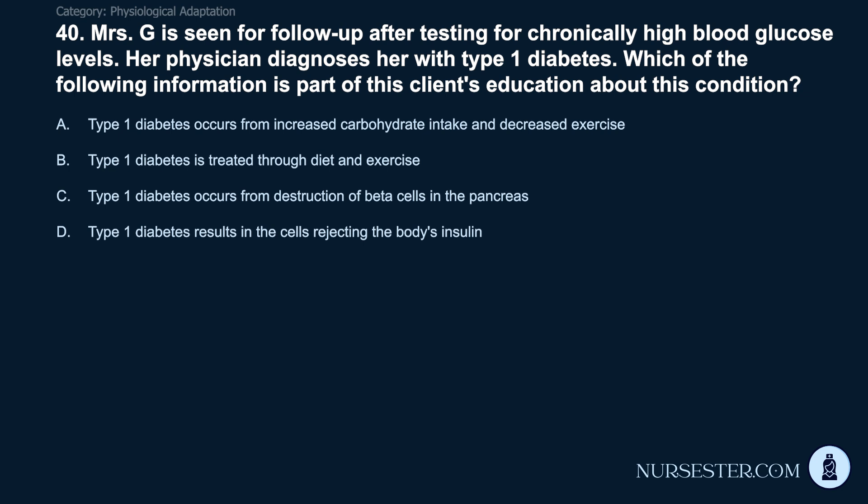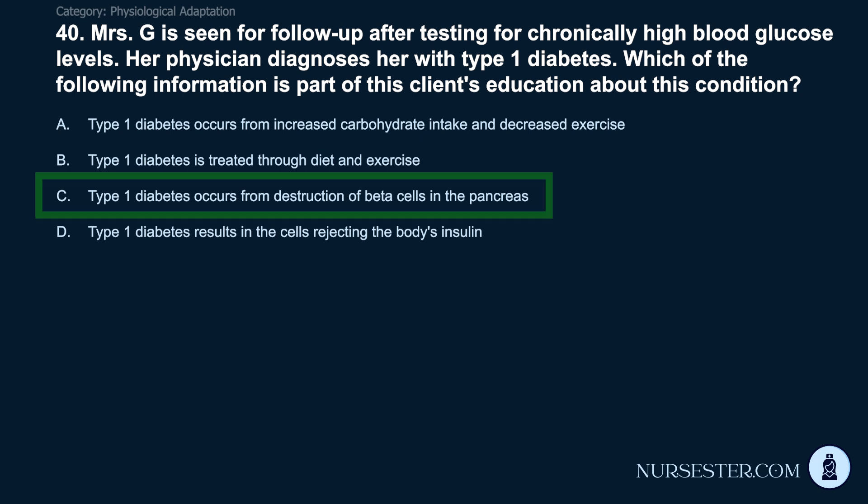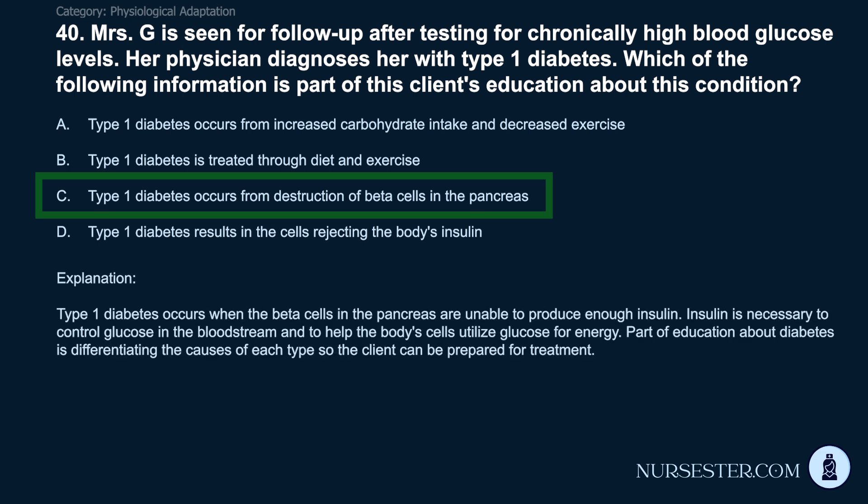Question 40: Mrs. G is diagnosed with type 1 diabetes following chronically high blood glucose levels. Which information is part of her education? A) Type 1 diabetes occurs from increased carbohydrate intake and decreased exercise. B) Type 1 diabetes is treated through diet and exercise. C) Type 1 diabetes occurs from destruction of beta cells in the pancreas. D) Type 1 diabetes results in the cells rejecting the body's insulin. Correct answer: C. Type 1 diabetes occurs when beta cells in the pancreas are unable to produce enough insulin. Insulin is necessary to control glucose and help cells utilize glucose for energy. Education about diabetes includes differentiating the causes of each type so the client is prepared for treatment.